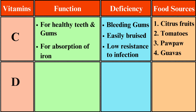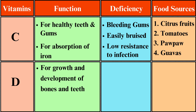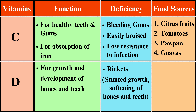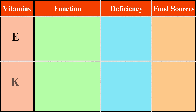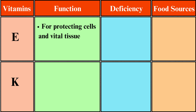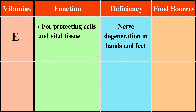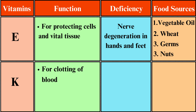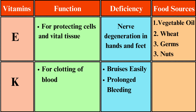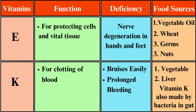Vitamin D: for the growth and development of bones and teeth. Deficiency causes rickets, stunted growth, and softening of bones and teeth. Food sources include eggs, liver, and dairy products. Vitamin E: for protecting cells and vital tissue. Deficiency causes nerve deterioration in hands and feet. Food sources include vegetable oil, wheat germ, and nuts. Vitamin K: for clotting of blood. Deficiency causes easy bruising and prolonged bleeding. Food sources include vegetables and liver. Vitamin K is also made by bacteria in the gut.